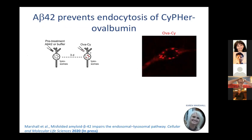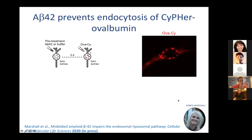What we wanted to see was what Abeta actually does in cells — what effects it might have on normal cell function. To do that, we used a protocol developed by Sheena's lab, using a CYPHER tag to look at what happens to ovalbumin internalization. Ovalbumin is a nice model system for endocytosis. In this movie you can see it being internalized as you would expect into lysosomes.